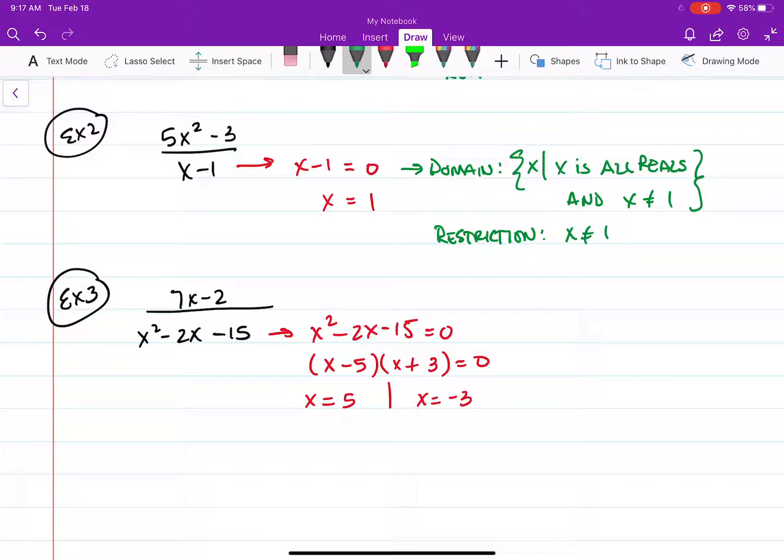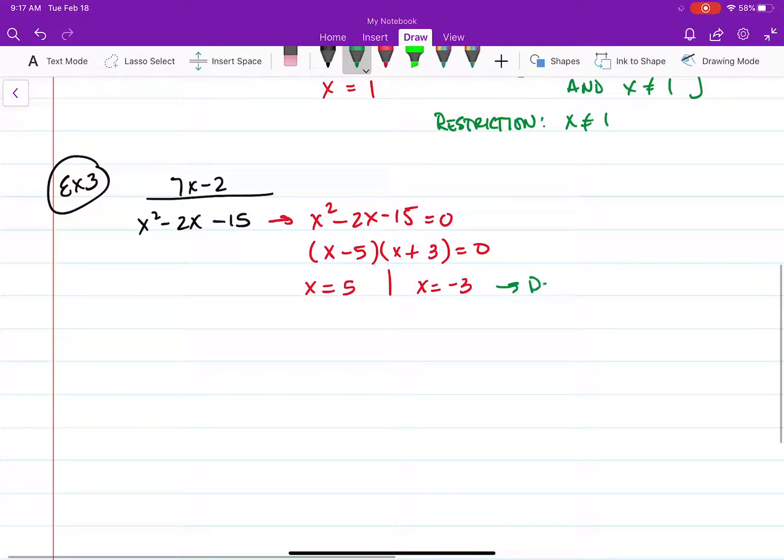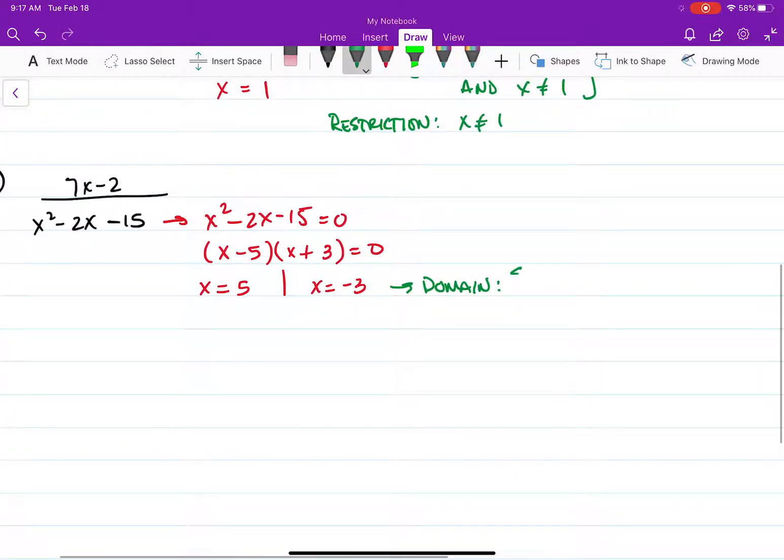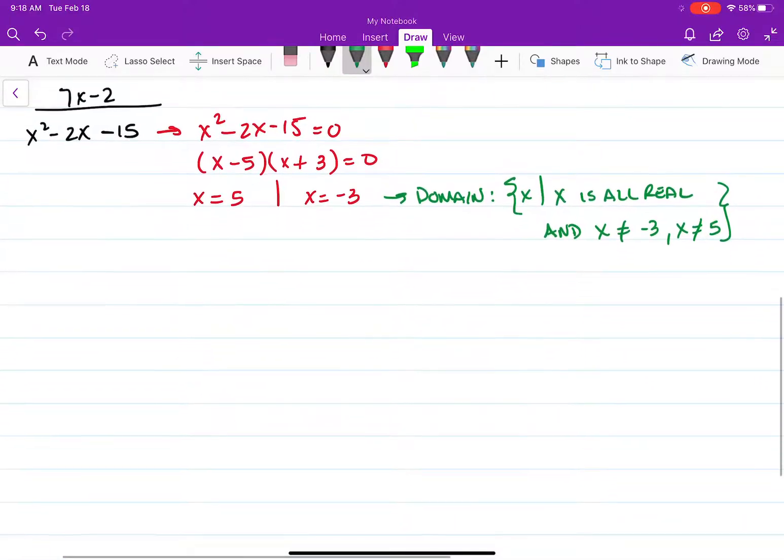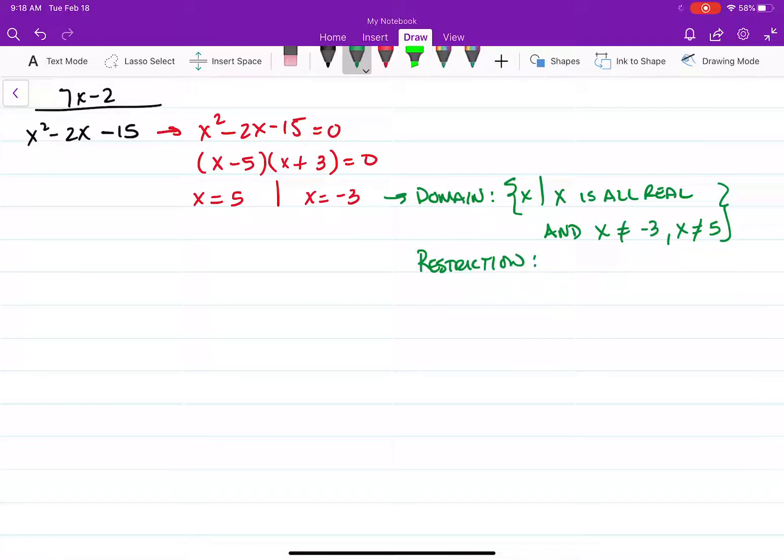So with that being said, my domain would be for all x such that x is all real, and x cannot be negative 3, x cannot be 5. So our restriction is the fact that x cannot be negative 3 or 5.